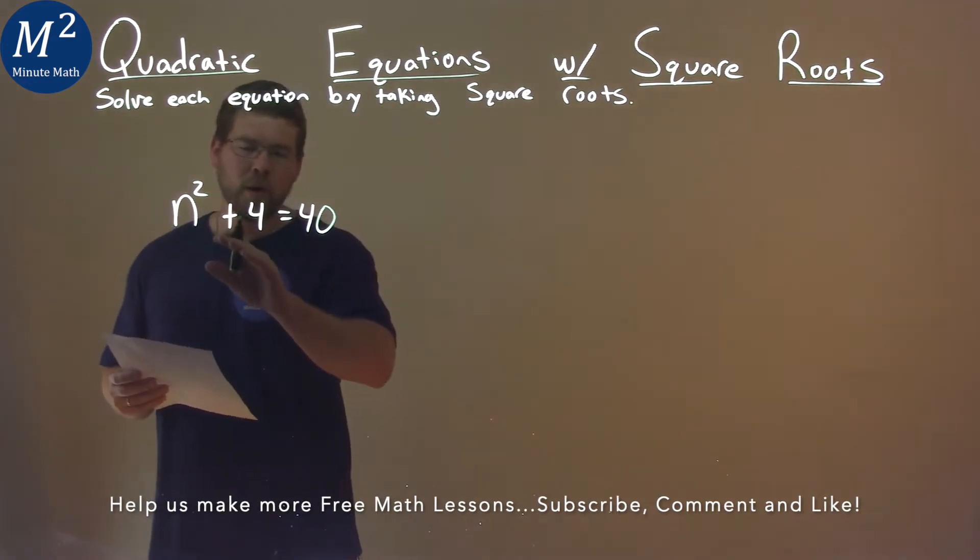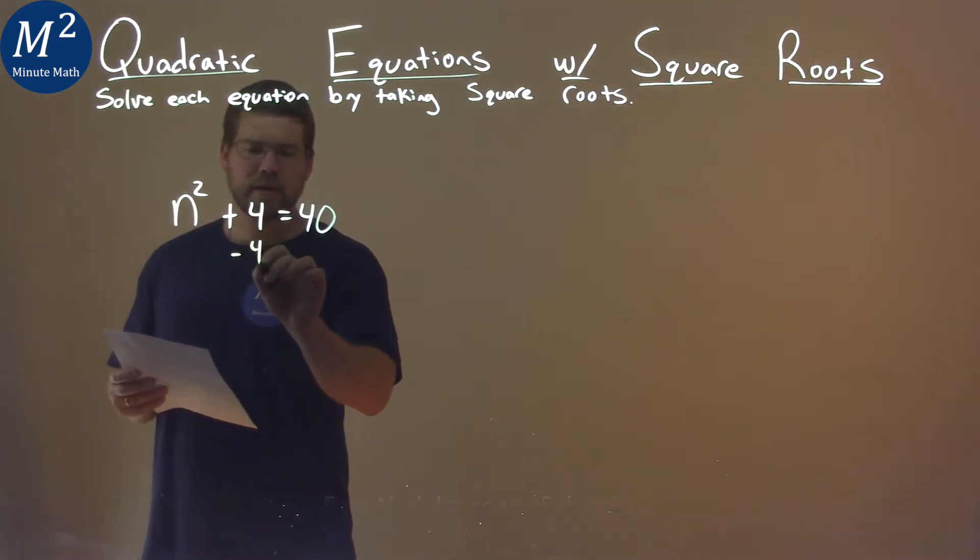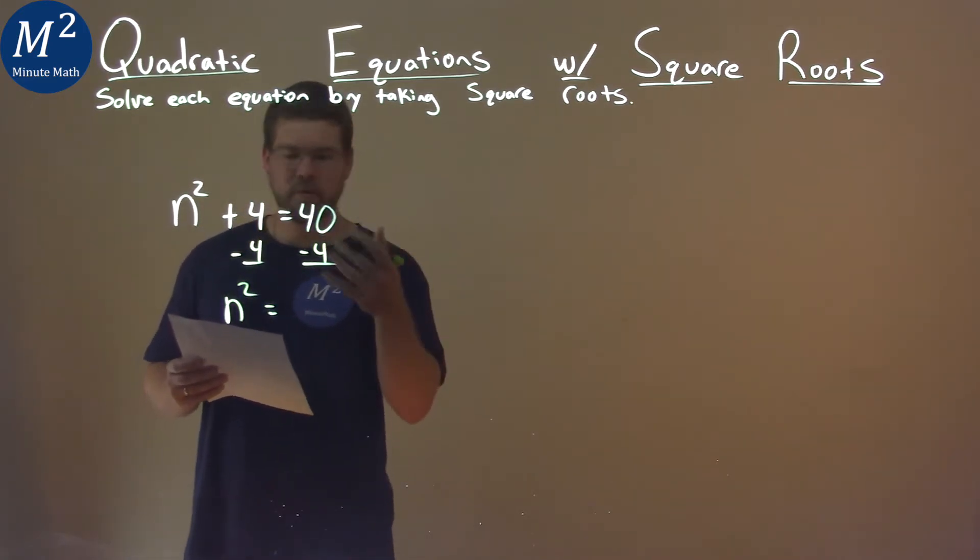Well, my goal here is to get n squared by itself, so I subtract 4 from both sides, and I have n squared now equal to 40 minus 4, which is 36.